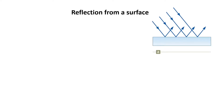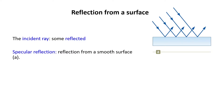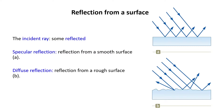Depending on the type of surface, we have two kinds of reflections. We call the reflection from a smooth surface specular reflection. By a smooth surface, I mean that any kind of roughness on the surface, like bumps, are smaller than the wavelength. If this condition is not satisfied, we will have a diffuse reflection as you see in figure B, where the reflected rays are scattered along random directions.